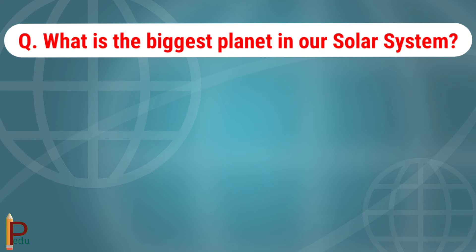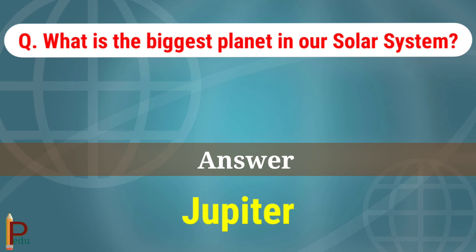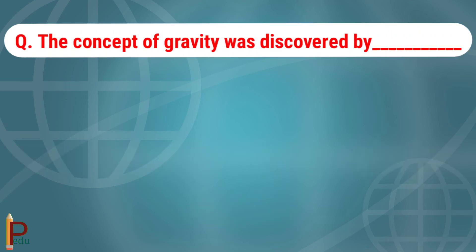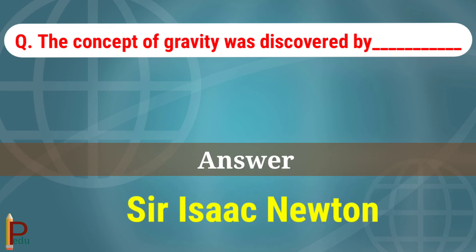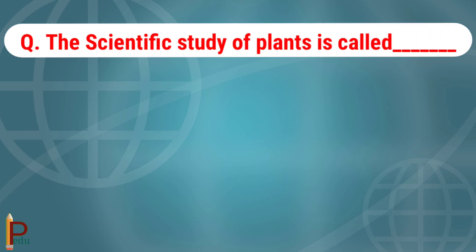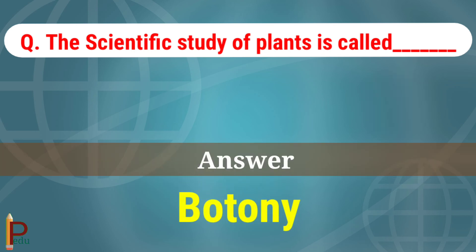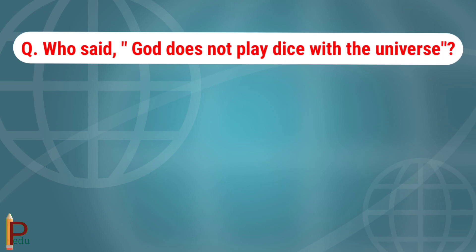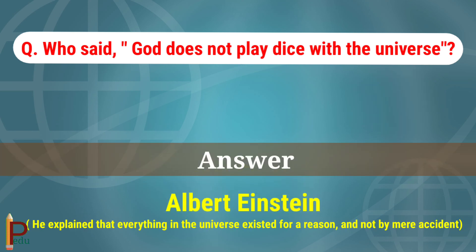Which is the biggest planet in our solar system? The answer is Jupiter. The concept of gravity was discovered by Sir Isaac Newton. The scientific study of plants is called botany. Who said 'God does not play dice with the universe'? The answer is Albert Einstein, who explained that everything in the universe existed for a reason and not by mere accident.